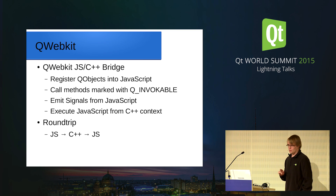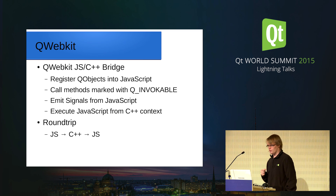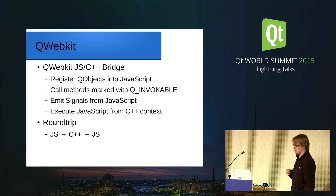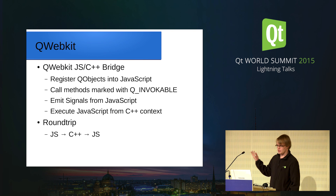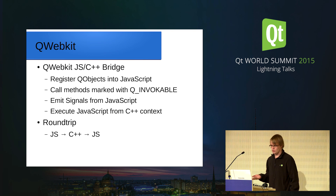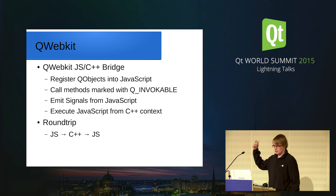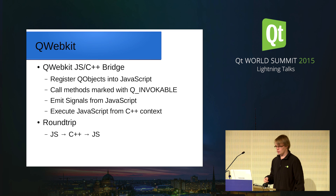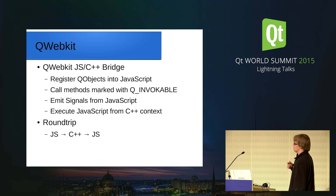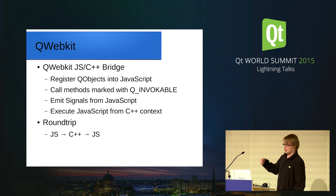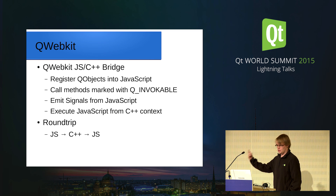The QWebKit bridge and QWebEngine now offer the ability to register Q objects into JavaScript, and I can call methods on them with Q_INVOKABLE. I can emit JavaScript signals and execute them in the C++ world. Basically what I need is a roundtrip: JavaScript triggers C++, and then C++ executes JavaScript.